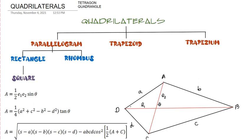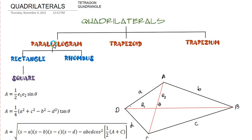Hello everyone, hello future engineers. Before we proceed with the concept of solid geometry, we have to finish our topic on plane geometry. For this discussion video, we have to talk about quadrilaterals — a general term for a four-sided polygon. Quadrilaterals could also be called a tetragon or quadrangle. There are six types of quadrilaterals: square, rectangle, rhombus, parallelogram, trapezoid, and trapezium, each with special qualities.